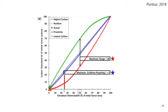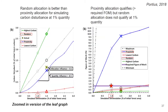At the red star, when simulated quantity is 50%, the highest and lowest carbon allocations form their maximum range of 38 percentage points for carbon disturbance. At the blue star, when simulated quantity is 25%, the random and proximity allocations form their maximum range of three percentage points. In the zoomed-in version of the leaf graph at the origin, the leaf graph reveals that at the 1% extrapolated quantity, the gray random allocation line is closer to the black X — the true carbon disturbance at 1.5% true deforestation — than the blue proximity allocation line, meaning random allocation is more accurate than proximity allocation for simulated carbon disturbance at the extrapolated quantity.